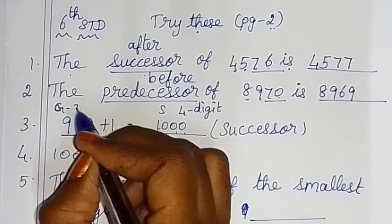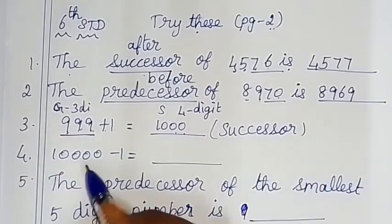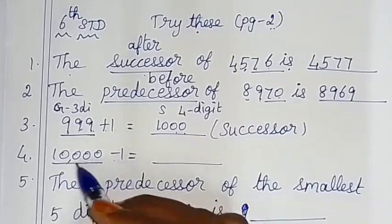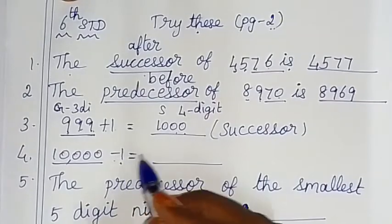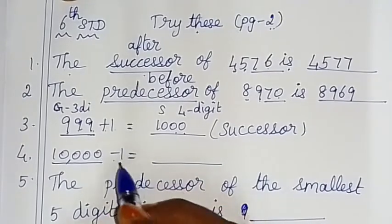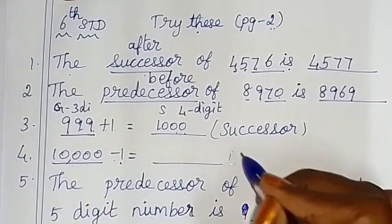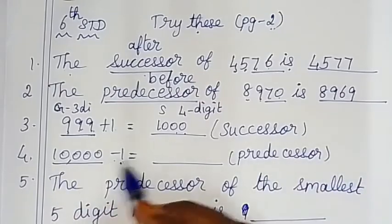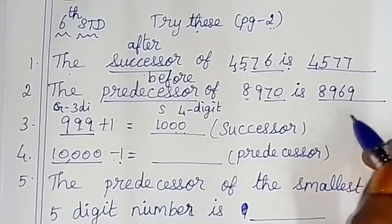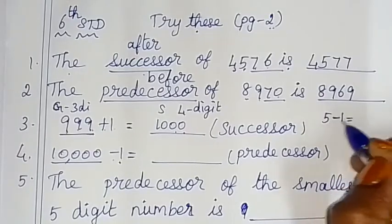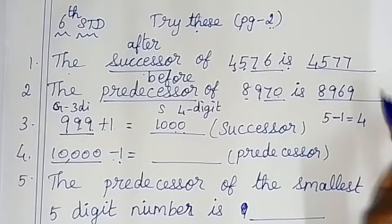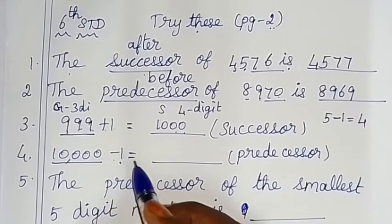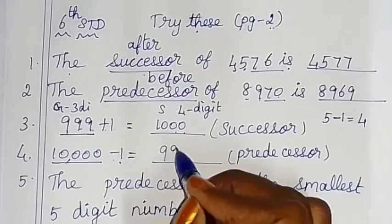Now we have the smallest five-digit number. Ten thousand minus 1 — if we subtract 1, we get the before number, which is the predecessor. So 10,000 minus 1 gives us the value 9,999.